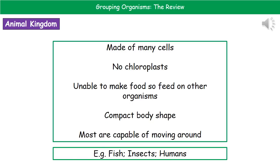The second kingdom is the animal kingdom. The features that all organisms in the animal kingdom share are that they're made of many cells, they do not have chloroplasts, they're unable to make their own food so they feed on other organisms, they've got a compact body shape, and most are capable of moving around. Examples include fish, insects, and humans.